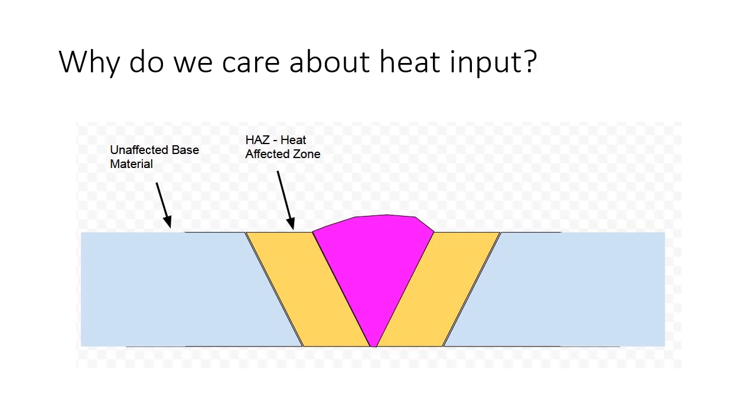For this video, we're just going to talk about quenched and tempered steels. When you're welding, you start with unaffected base material, and when you're done, you have three different areas: weld metal, heat affected zone, and unaffected base material.